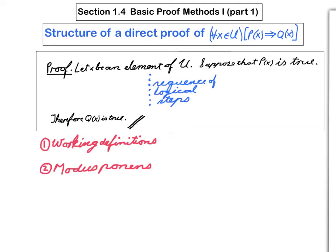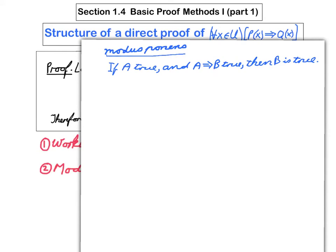Now, modus ponens is a concept that we've already studied, so recall what it means. Modus ponens says, if we know that A is true, and A implies B is true, then we immediately know that B is true.